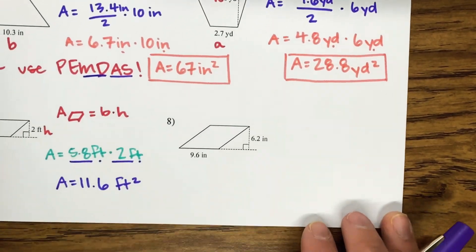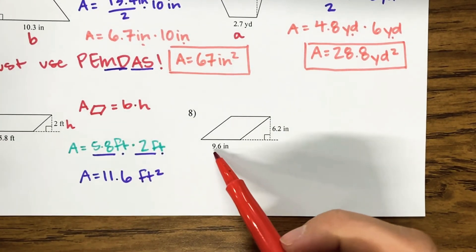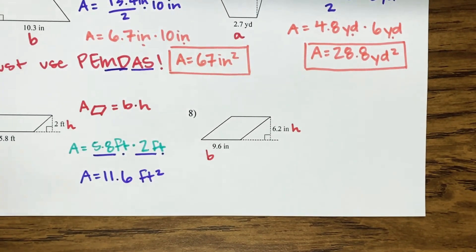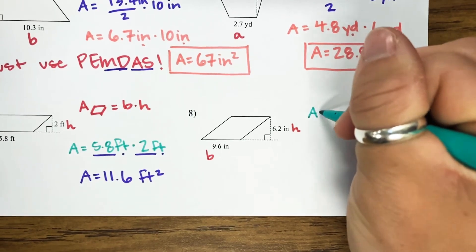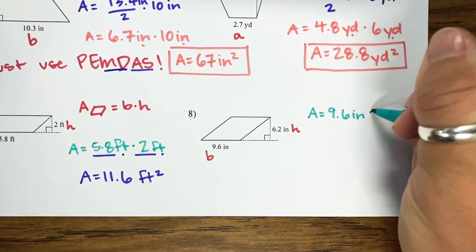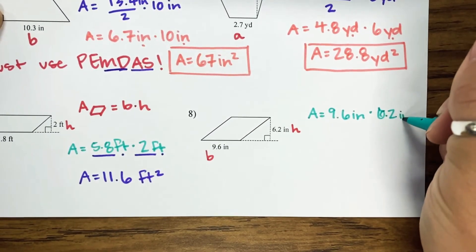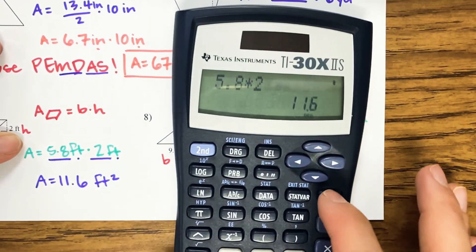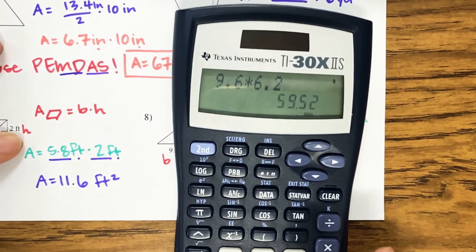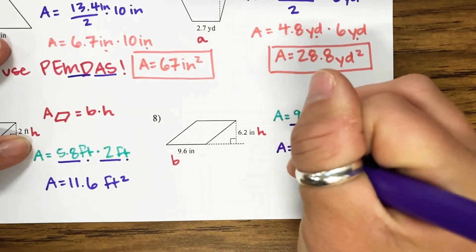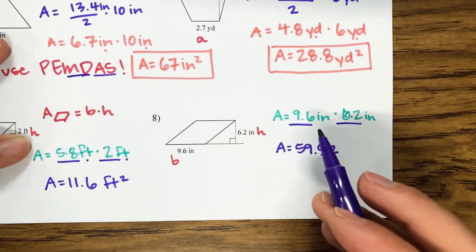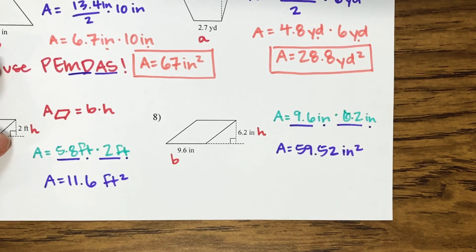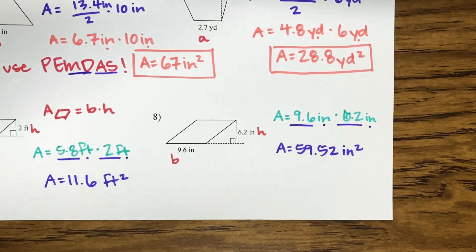One more — for number 8, my base is 9.6 and my height is 6.2. Area equals my base, 9.6 inches, times my height, 6.2 inches. 9.6 times 6.2 is 59.52. The unit of measurement is inches and inches, so inches squared. Those are your notes for today — there is an assignment that goes with it.